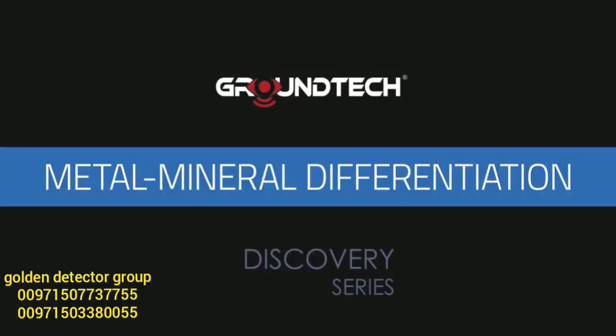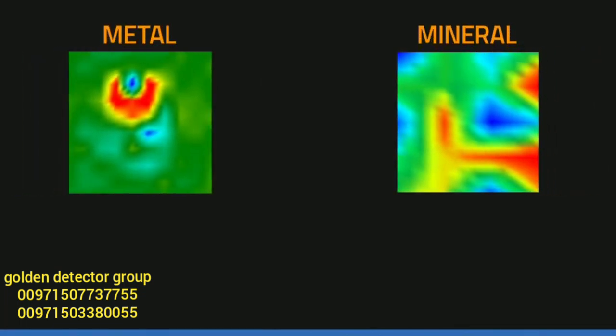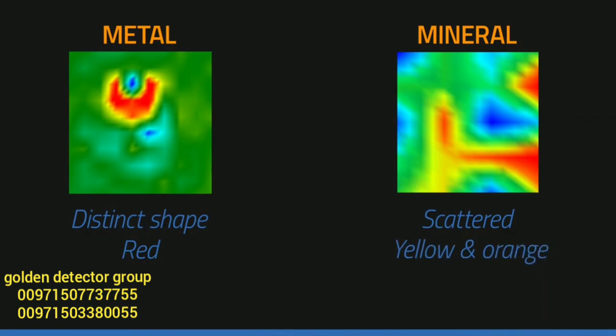Metal detection and metal mineral differentiation: metallic objects have a distinct shape, while minerals usually have a messy and scattered appearance. Metallic objects have red color. Mineral substances are usually yellow and orange.